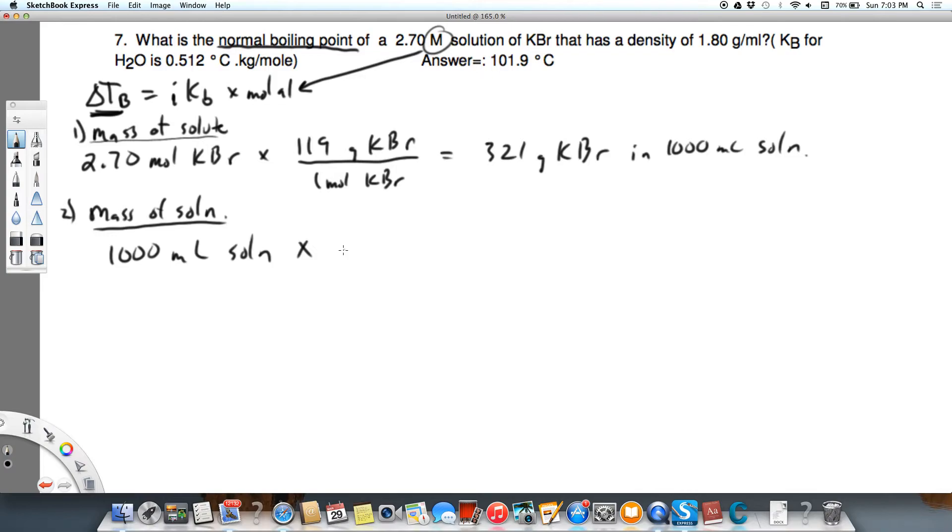and I'm going to multiply by the density, which is given as 1.80 grams solution over 1 milliliter of solution. And that will give me 1,800 grams of solution, or with sig figs, 1.80 times 10 to the third grams solution.